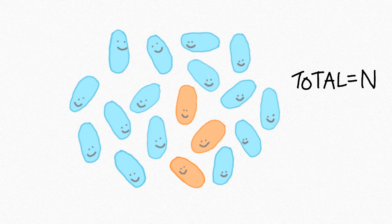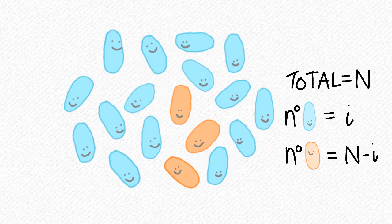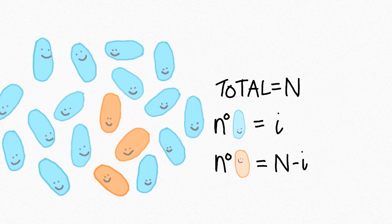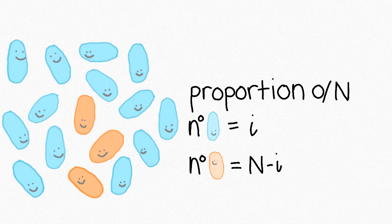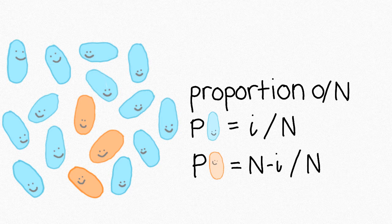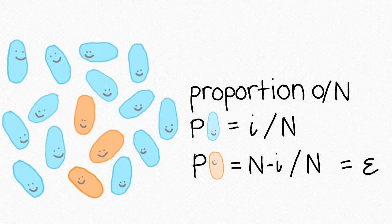There are n individuals in this population. i of them play blue, n minus i play orange. Clearly in our case population orange is a minority. We say that proportion i divided by n plays blue and n minus i divided by n plays orange. And this is denoted by ε, generally a tiny number to represent the proportion of mutant or alien allele.